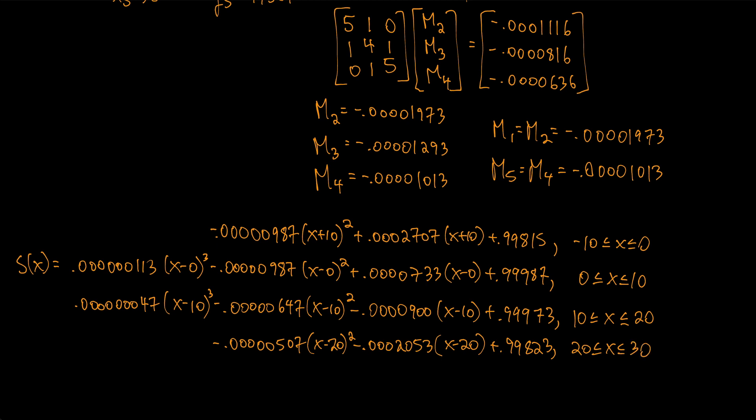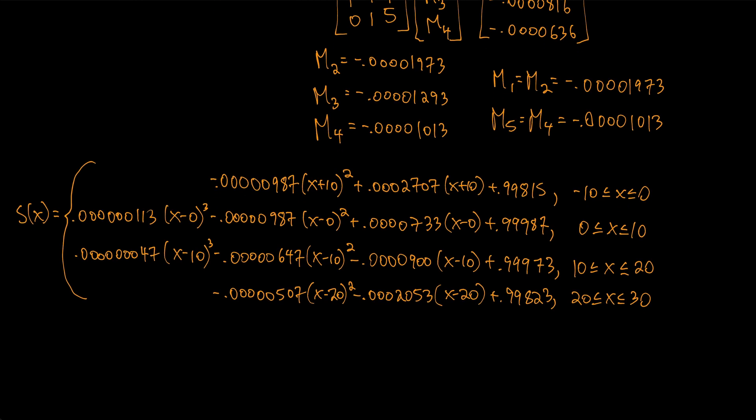Okay so that is gonna be our S(x), our cubic spline. If we take the derivative S'(x) then that would be 0.000000339x² - 0.0000007x + 0.0000733 for x between 0 to 10. Set that equal to 0 and see that we get x equals 3.99 for the interval between 0 to 10, so that's when the first derivative is 0.